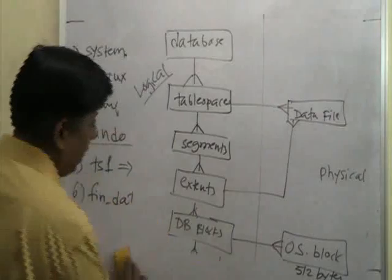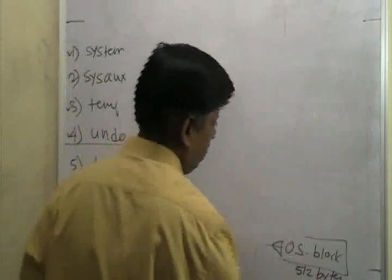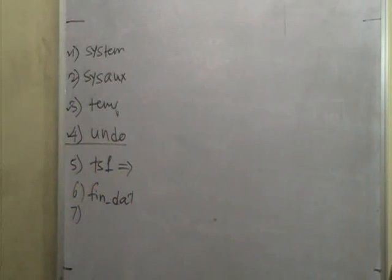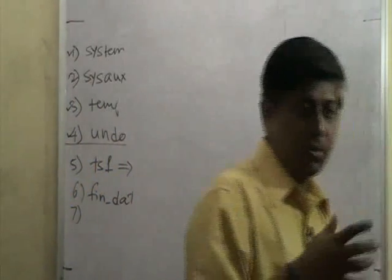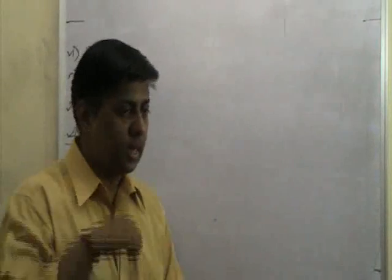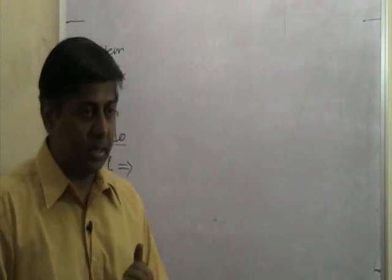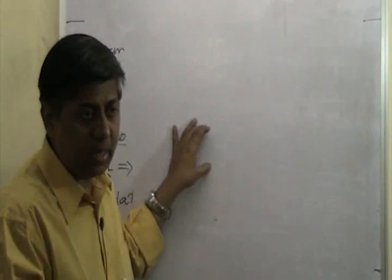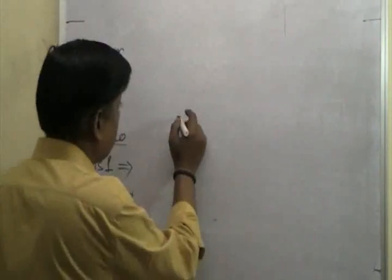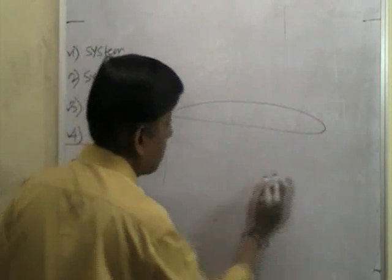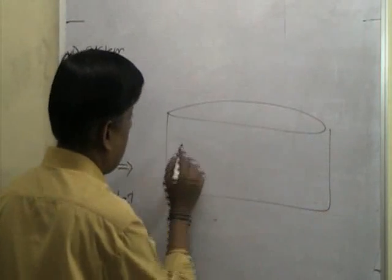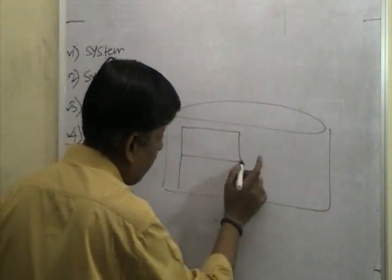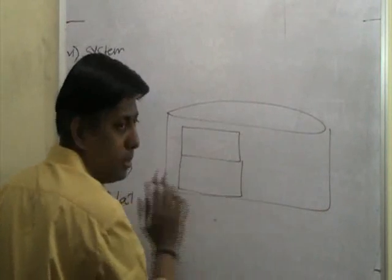Database, tablespace, segments, extents, database block - and rows are at the bottom of this hierarchy. Now there is another diagram to explain the difference between a segment and an extent. Multiple extents will create a segment. On the disk, let's say this is your hard disk with a first data file and a second data file together forming my tablespace.